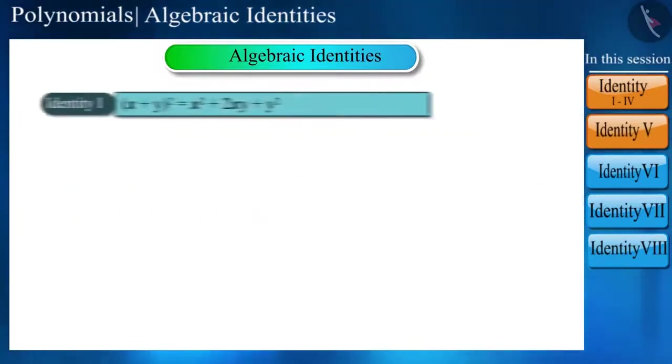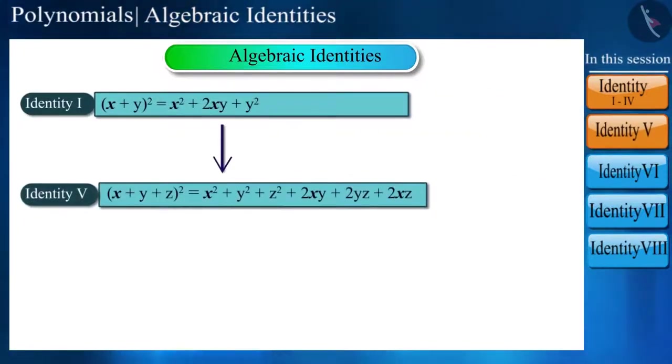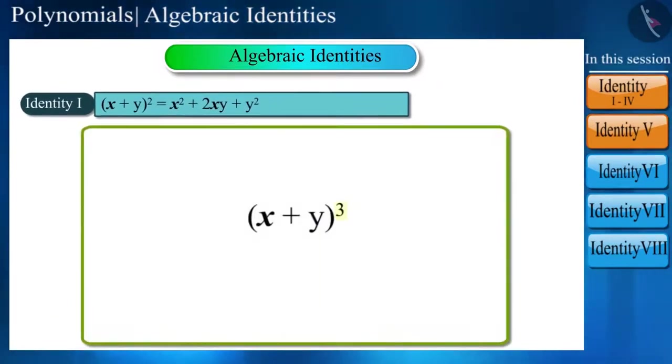Just like we learned how to derive the identity of the square of a trinomial from the square of a binomial, we will now learn to derive the identity of a cubic polynomial from a quadratic polynomial.